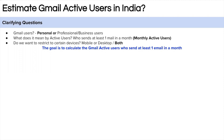The final clarifying question is whether we need to calculate desktop users, mobile users, or both. We'll assume the interviewer wants both types of users. So the goal of the problem is to calculate Gmail active users in India who send at least one email in a month.